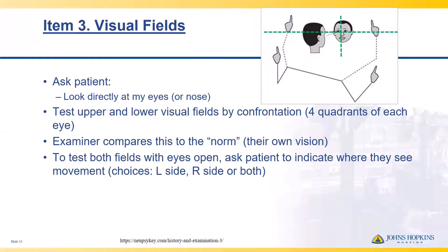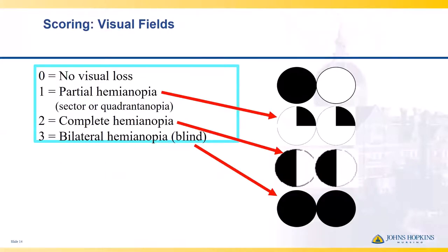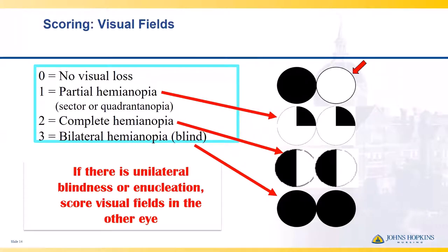For scoring visual fields: no visual loss earns no points. A partial hemianopsia — a sector or quadrant of missing vision — earns one point. A complete hemianopsia — a full hemisphere in one or both eyes — earns two points. If the patient cannot see at all — bilateral hemianopsia or blindness — they earn three points. If there is unilateral blindness at baseline or an enucleation, you only test the vision of their good eye.